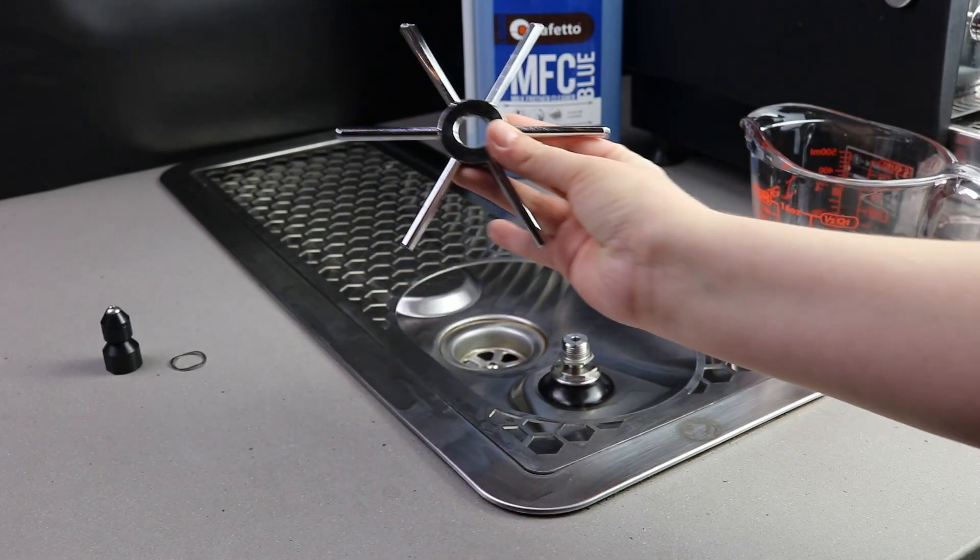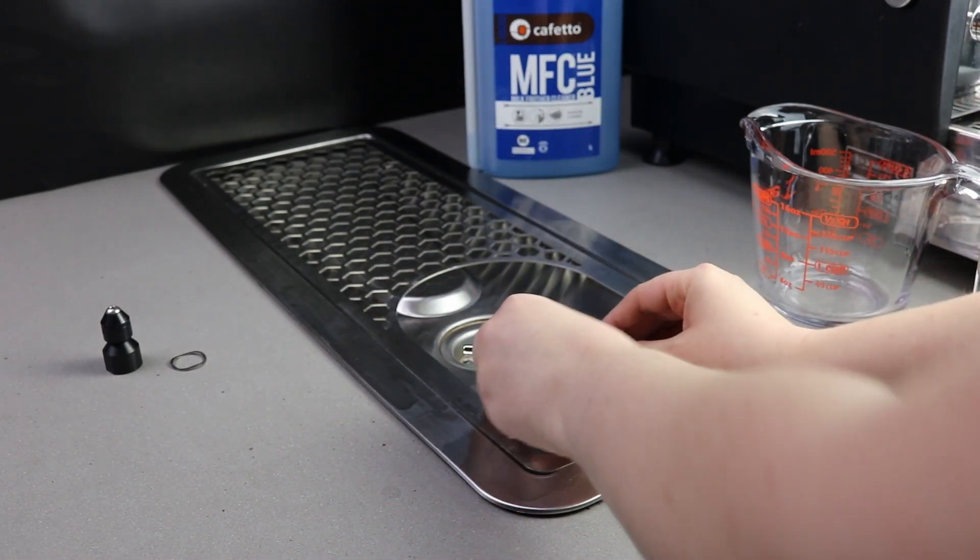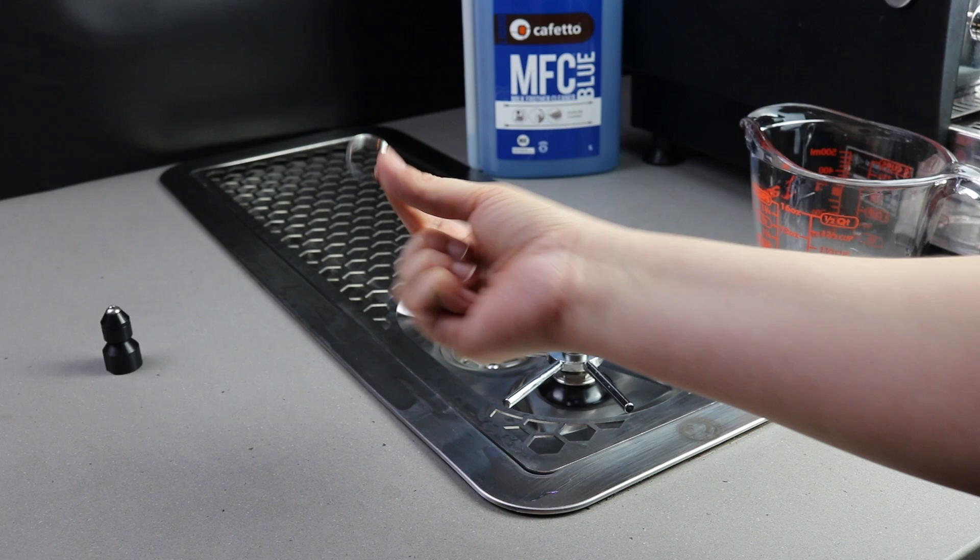Reinstall your star with the flat side up. Pop the wobble washer on and reinstall the spin jet by turning clockwise.